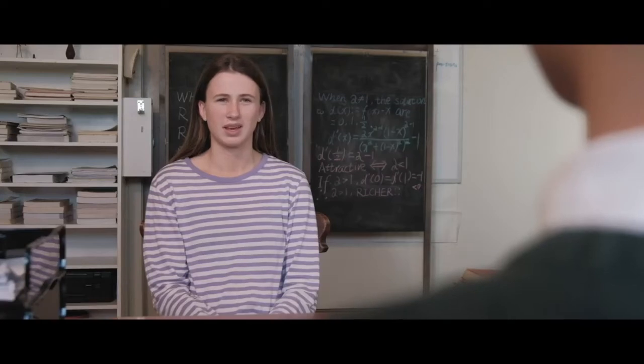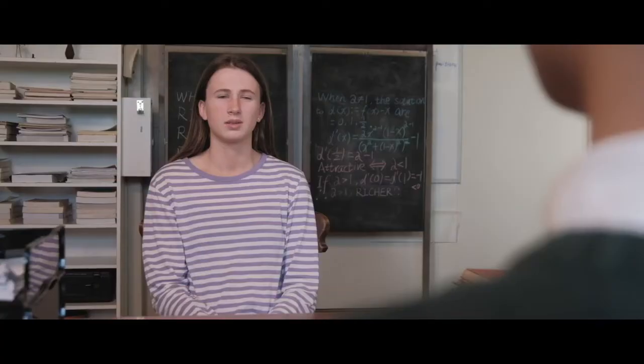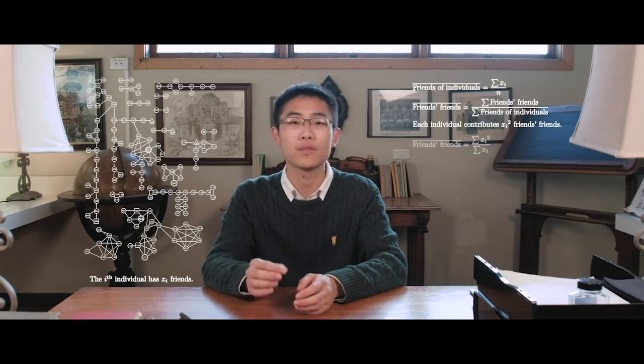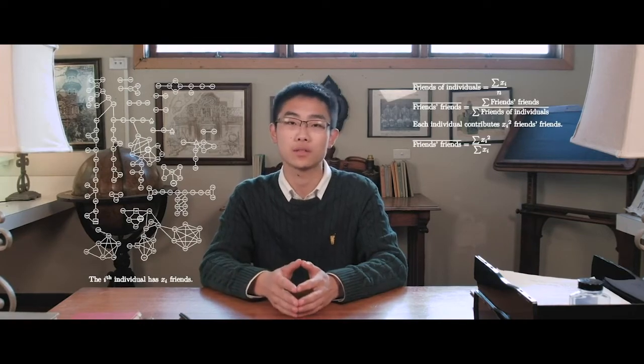Say we have some sort of network here, and the i-th individual has xi friends. So the average number of friends of individuals is simply the sum of xi over n. And the average number of friends of friends is the total number of friends of friends divided by the total number of friends of individuals. The i-th individual is a friend xi times and has xi friends, so that individual contributes xi squared friends of friends. So the average number of friends of friends would be the sum of xi squared over the sum of xi.